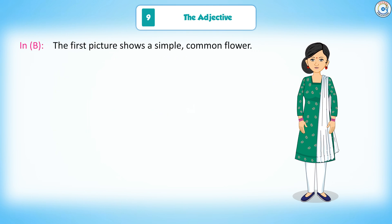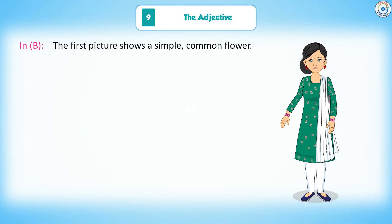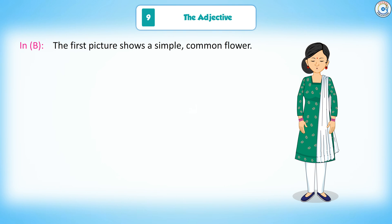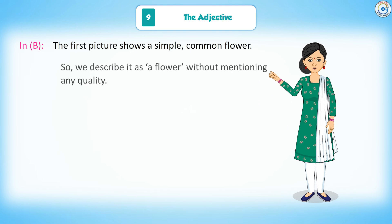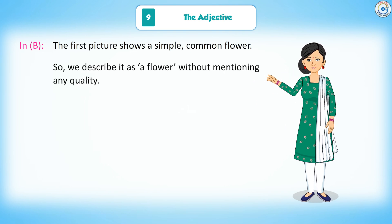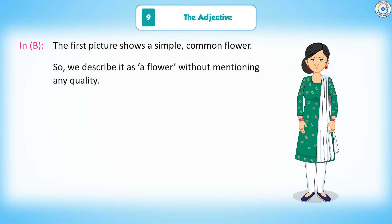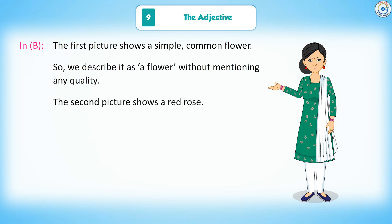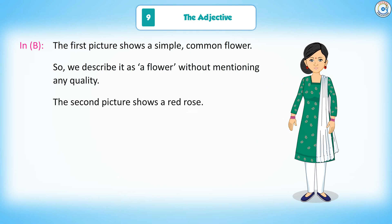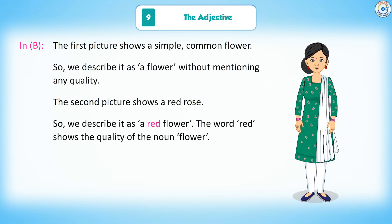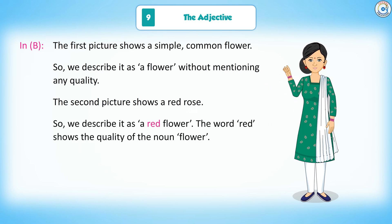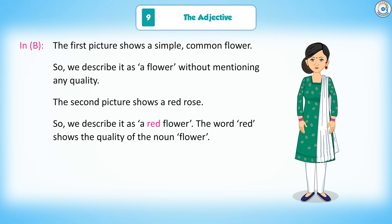In picture pair B, the first picture shows a simple common flower, so we describe it as 'a flower' without mentioning any quality. The second picture shows a red rose, so we describe it as 'a red flower.' The word 'red' shows the quality of the noun 'flower.'